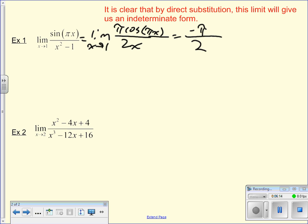So I do the same thing on this one. If I plug in two, I get zero in my numerator, I get zero in my denominator. It doesn't work. So what do I do to apply L'Hopital's rule? I get the limit as x approaches two. I take the derivative of my numerator, 2x minus 4. Derivative of my denominator, 3x squared minus 12. And I try again.